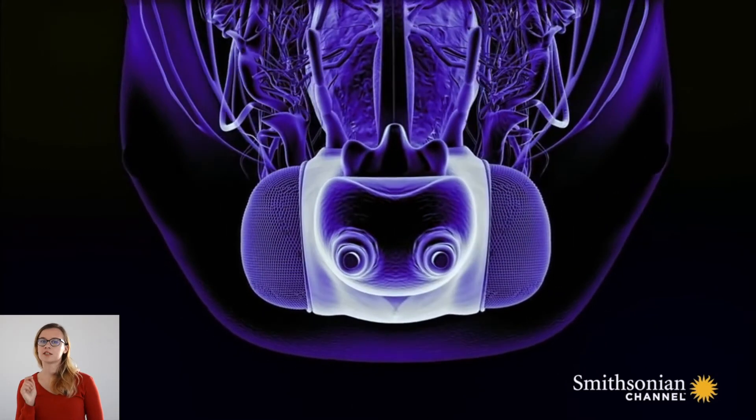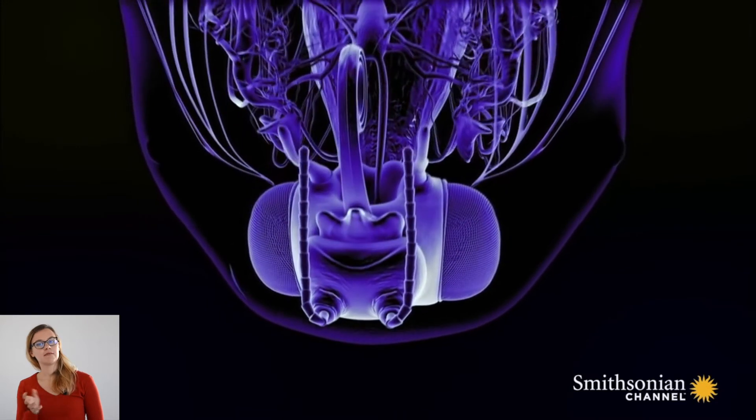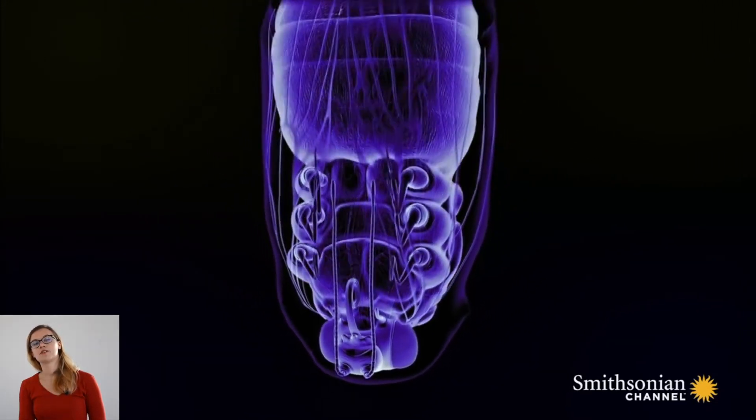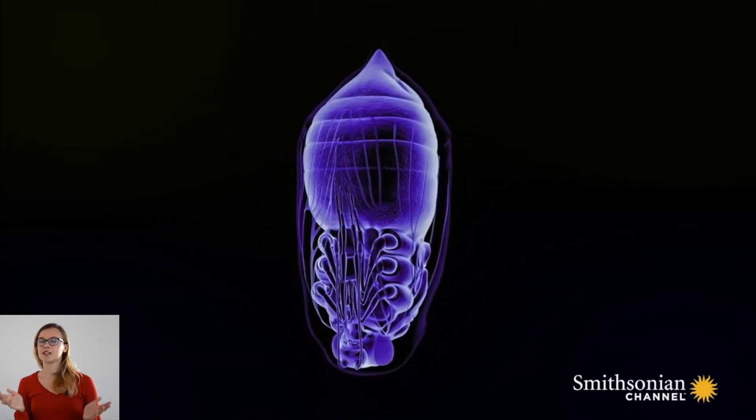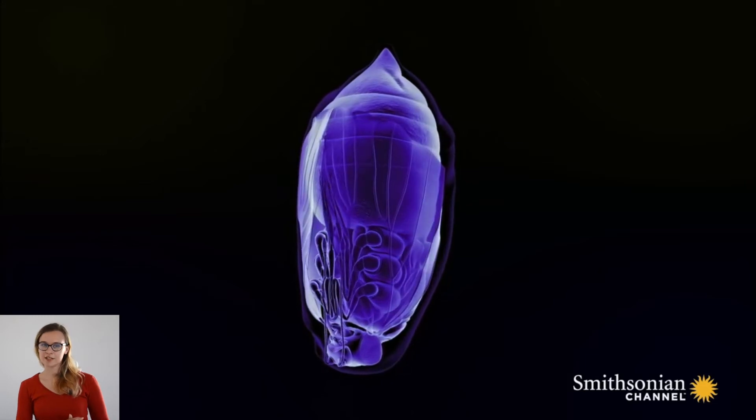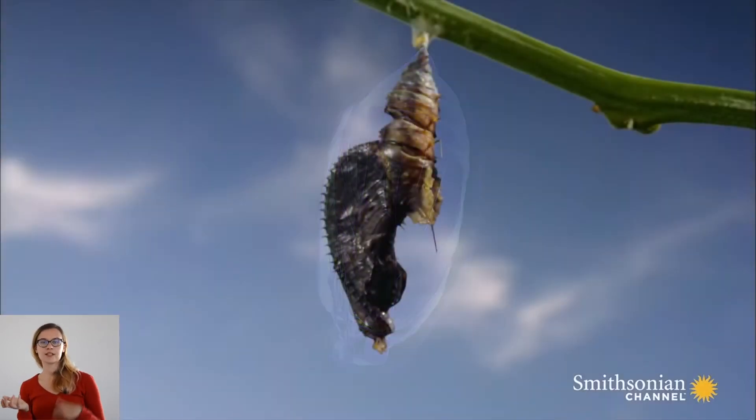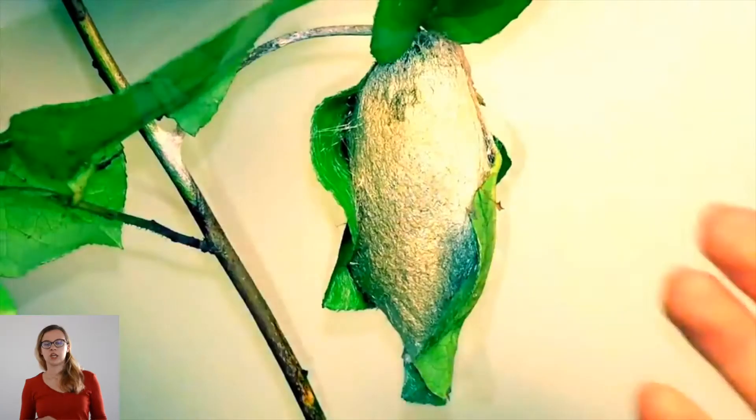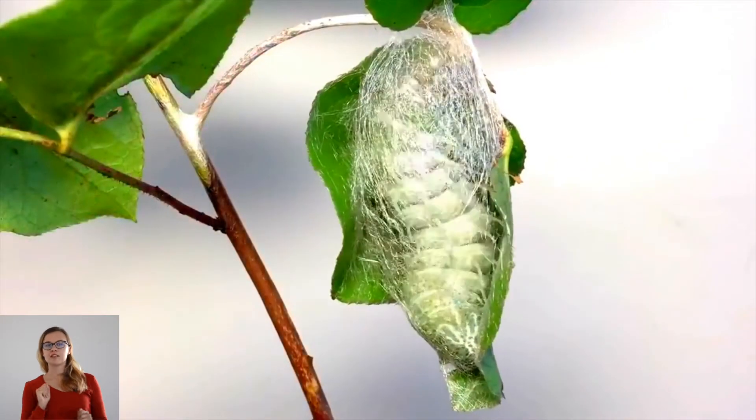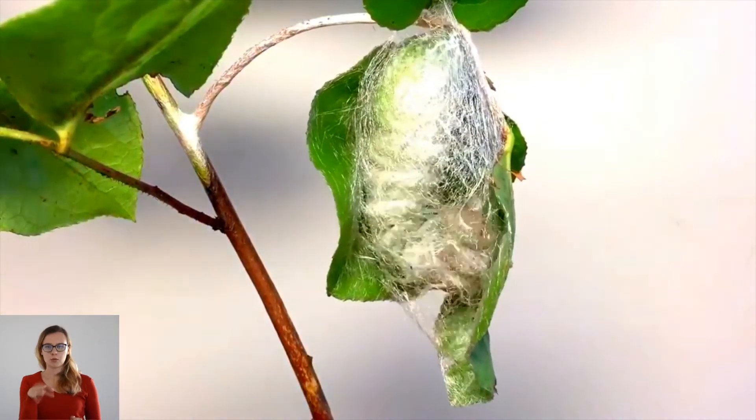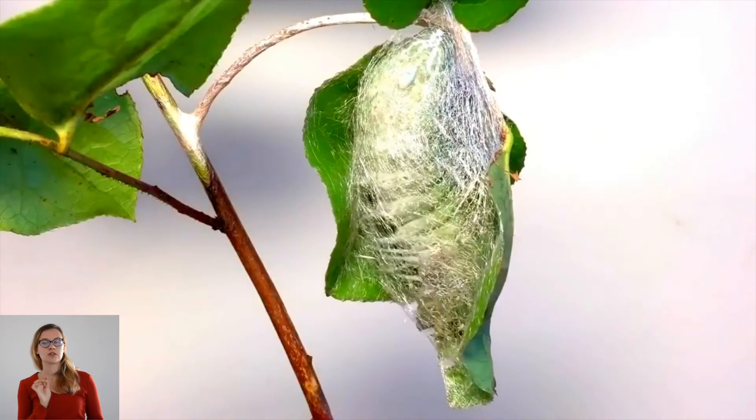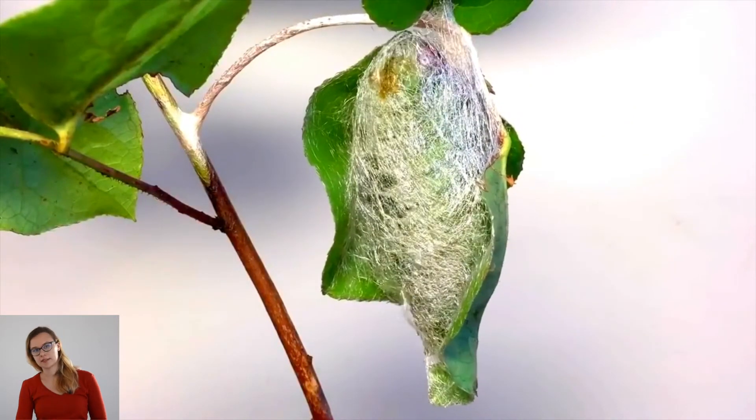Many people, while seeing a chrysalis, say it's a cocoon, which is not true. So we want to explain the difference between the chrysalis and the cocoon. Cocoon is an extra layer on top of the chrysalis. Only some of the species have it.